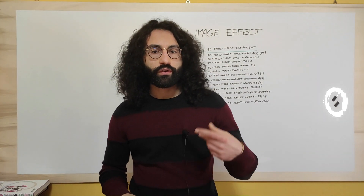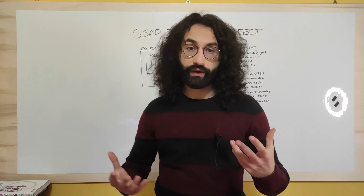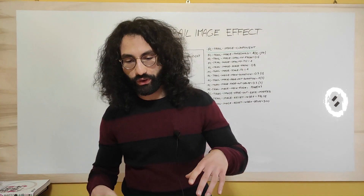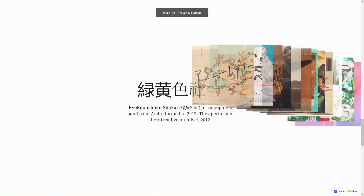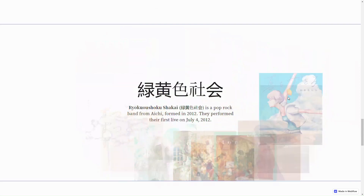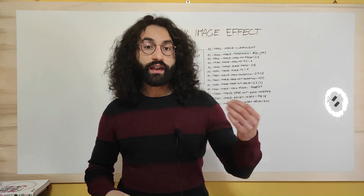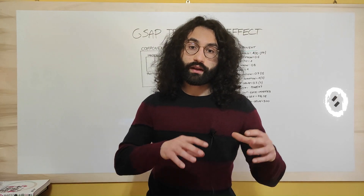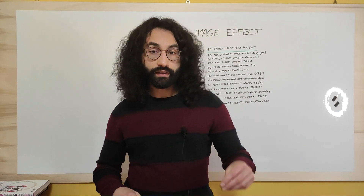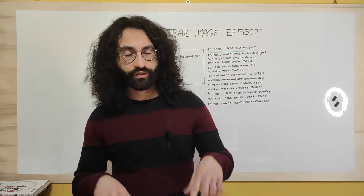In today's video we are going to merge the GSAP library and Webflow to create a trail image effect — an attributes-only solution so you won't need to code — and we are going to build a project that will look exactly like that, using both images from the CMS and static images. This project will be available as a clonable, and you will find the link to the clonable and the link to the instructional page with the list of all the steps required in the description down below.